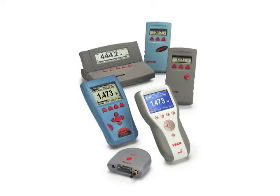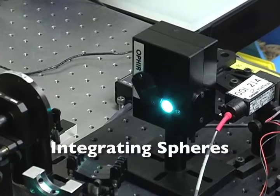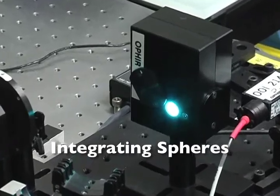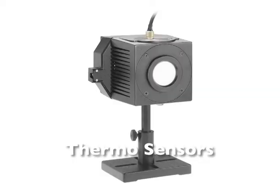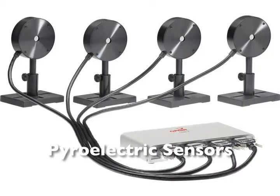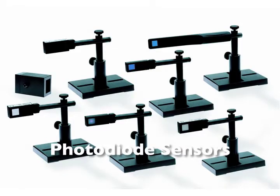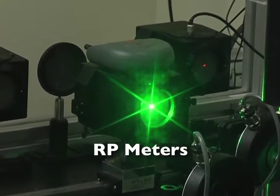Ophir's complete range of laser power and energy meters include photodiode sensors, integrating spheres for divergent beams, thermal sensors for power and single-shot energy, as well as pyroelectric, photodiode, and RP meters for repetitive energy measurements.